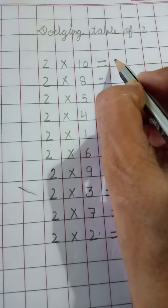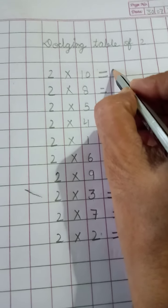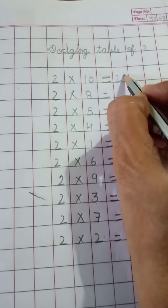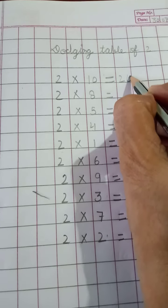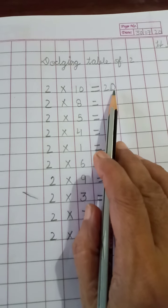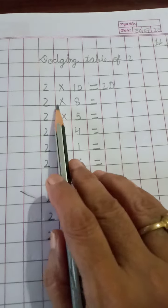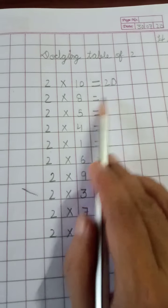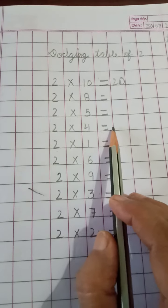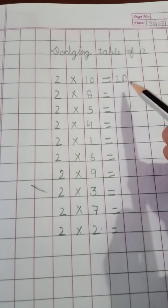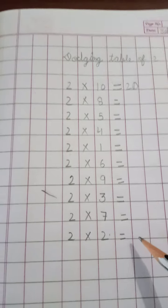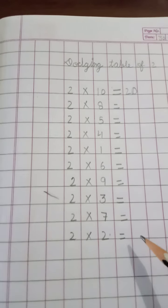2 tens are — tell me — 20! Here are 20s. 2 fives are, 2 fours are. This is all for today.